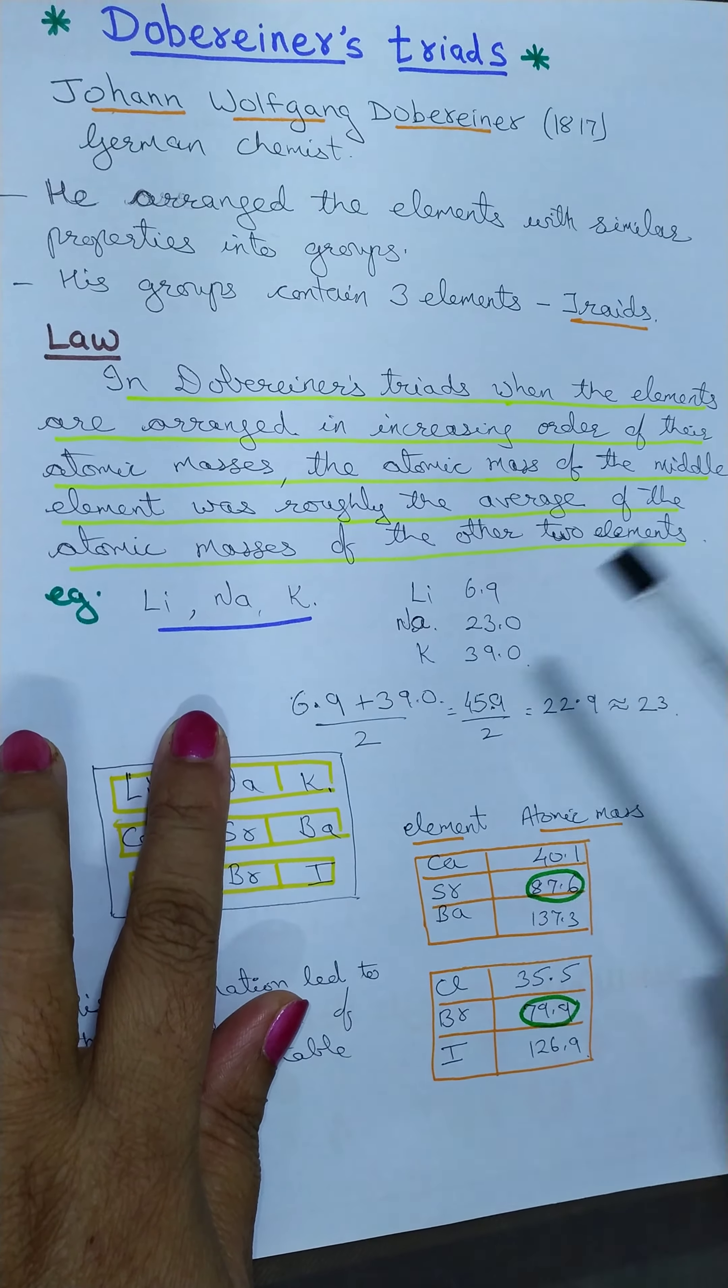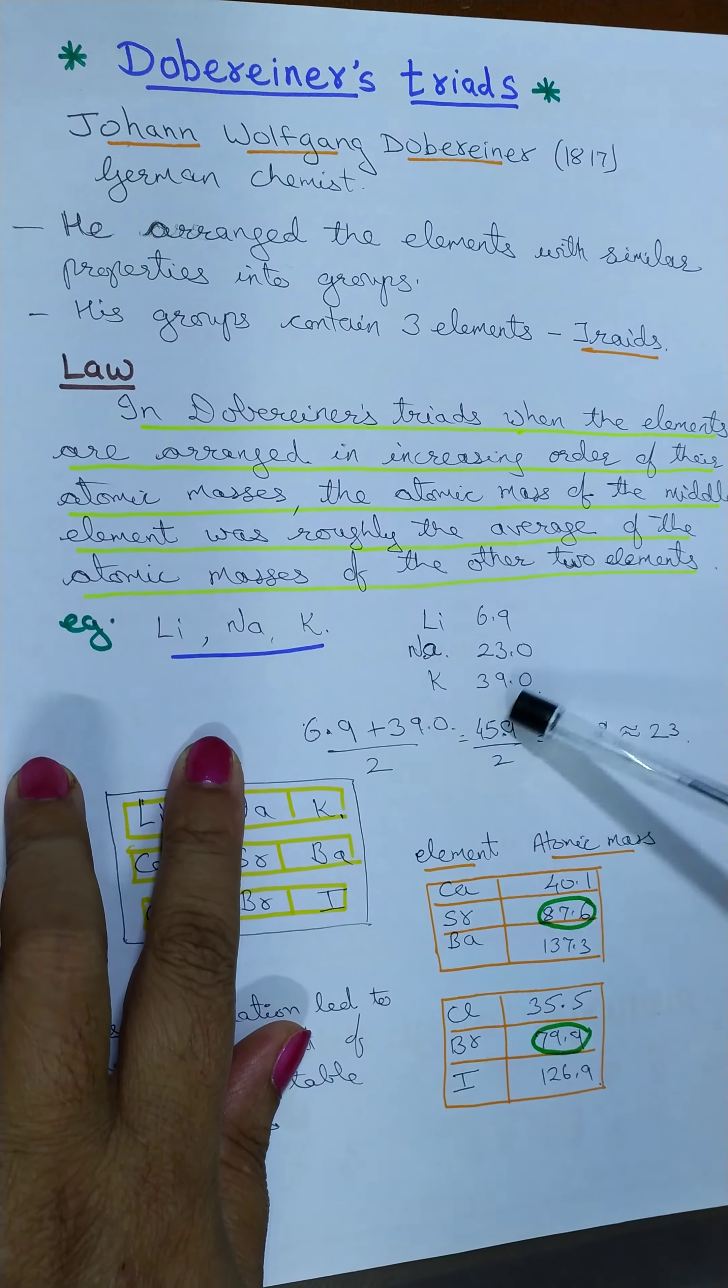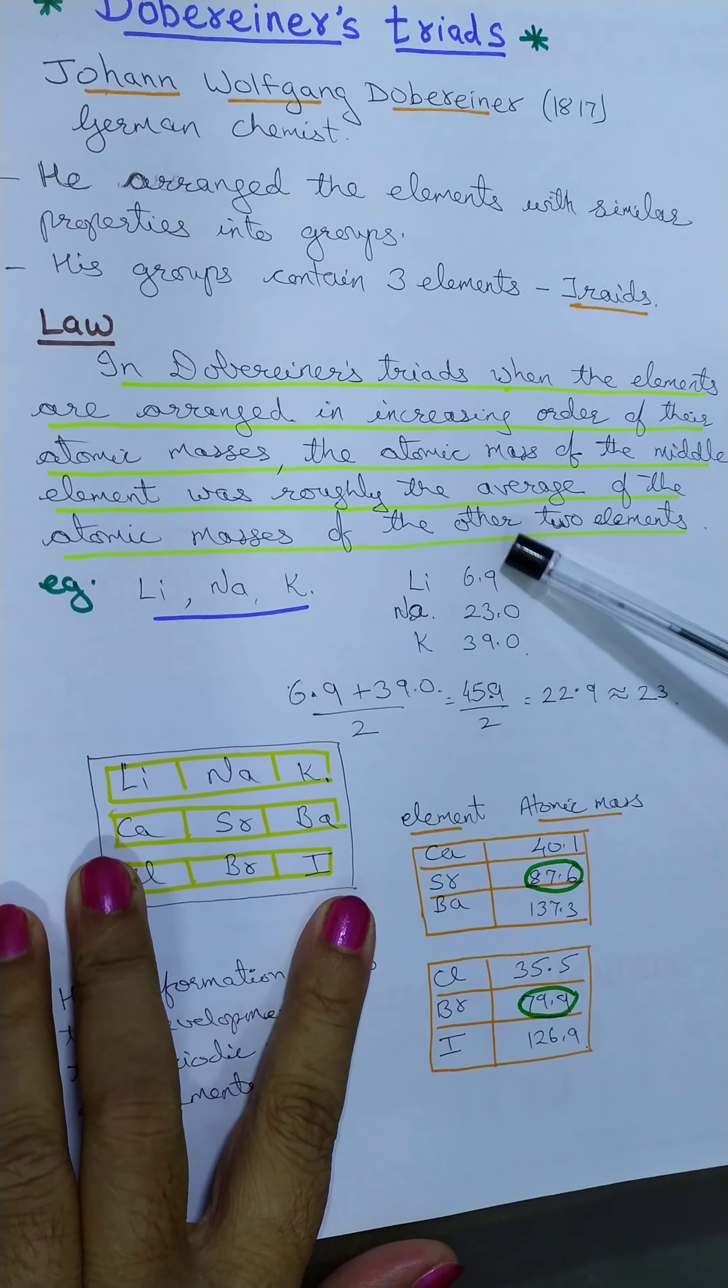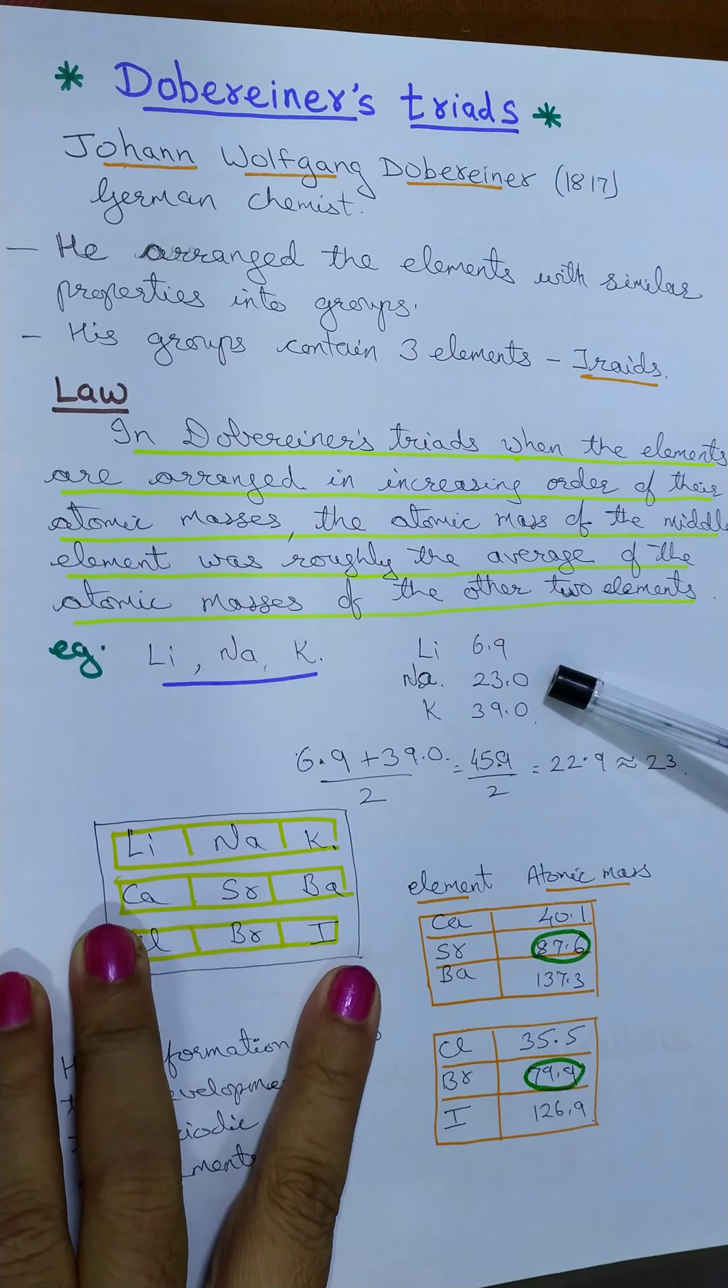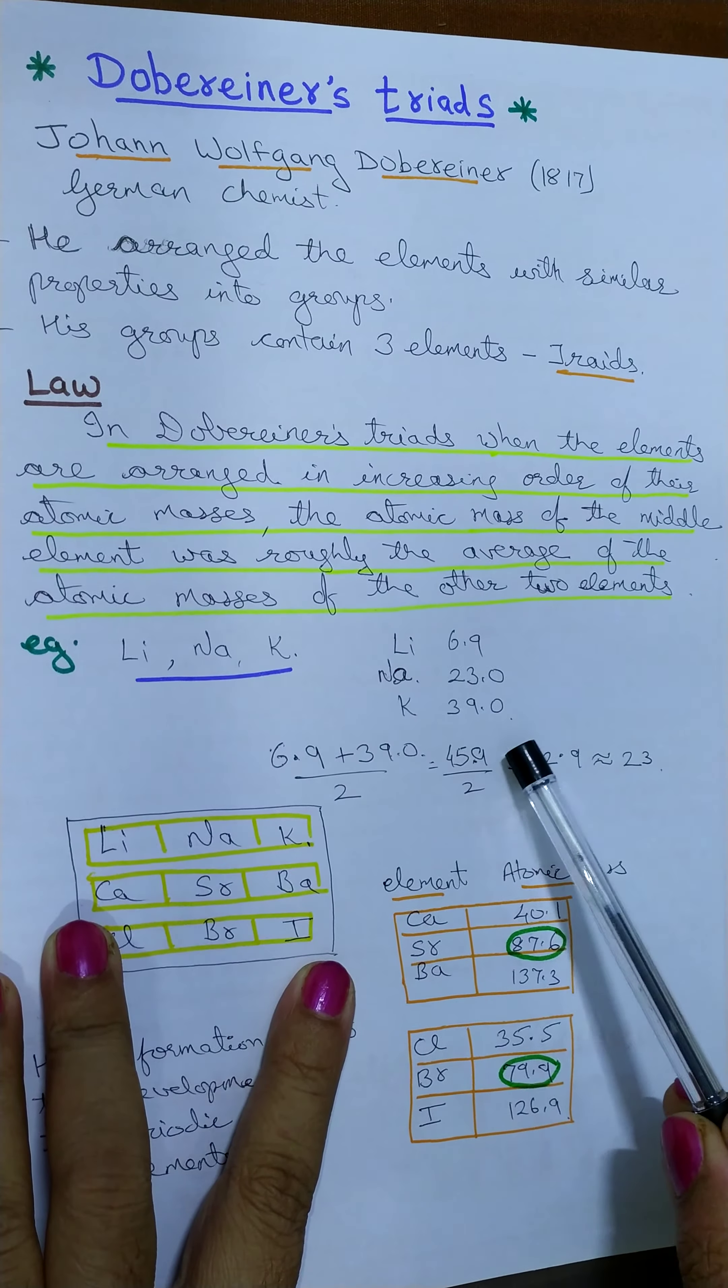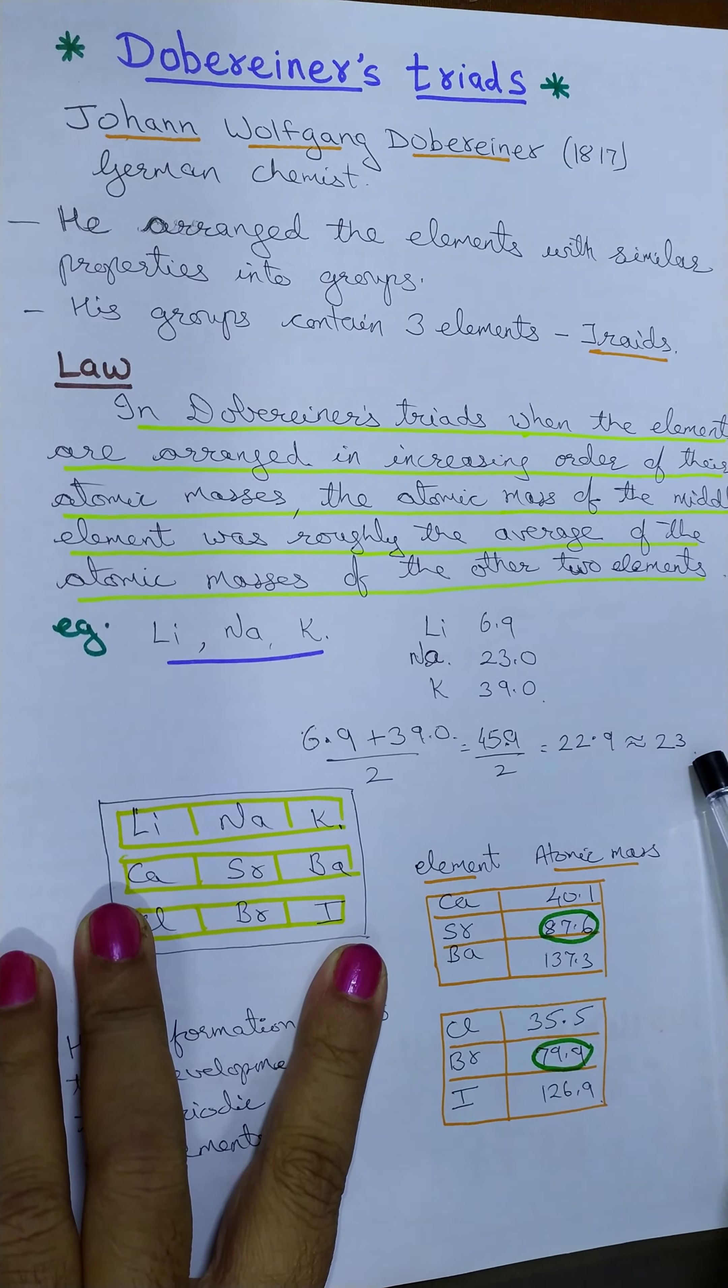You can round up to 7. Sodium is 23.0 and potassium is 39.0. According to his law, if we take the mean of the two elements, that is first and the last element, you will find that you get the atomic mass of the middle element. Let us try: 6.9 plus 39 divided by 2, you get 45.9 upon 2 and then finally 22.9, approximately 23. Hence,